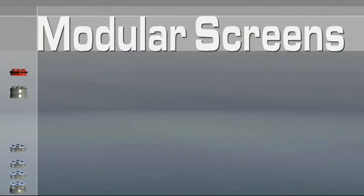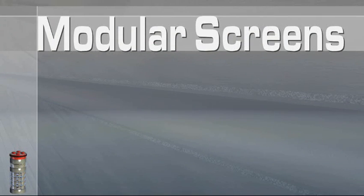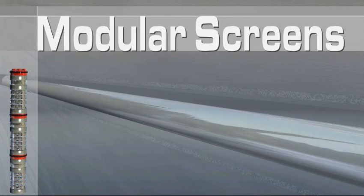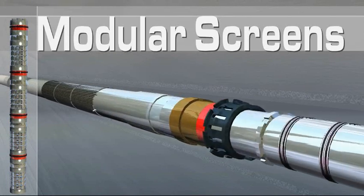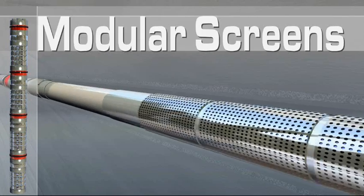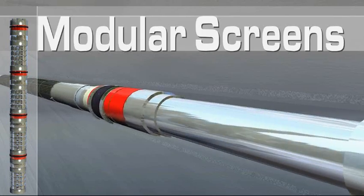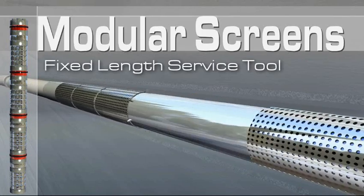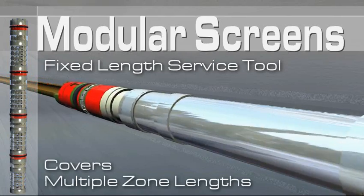A featured component of the ESTMZ system is the modular screen. This screen provides the capability to isolate each zone. The modular screen eliminates the need for an additional string of wash pipe, making it possible for a fixed-length service tool with minimal lower wash pipe to cover multiple zone lengths.